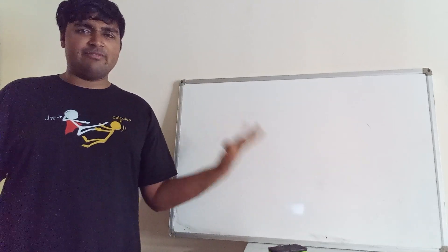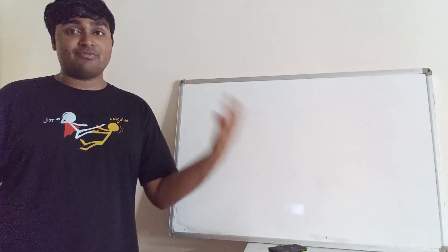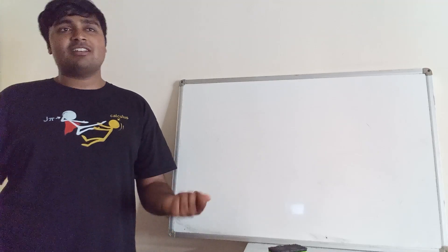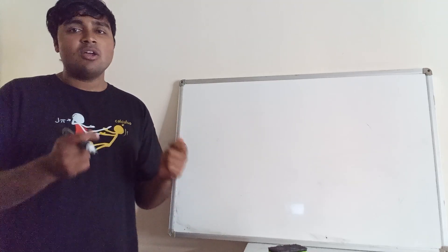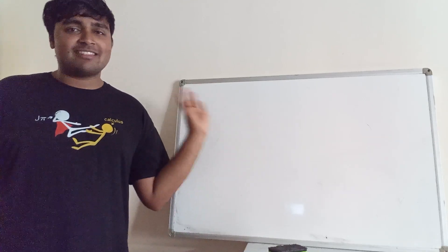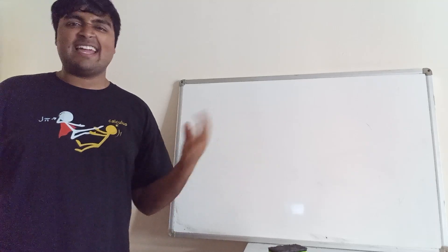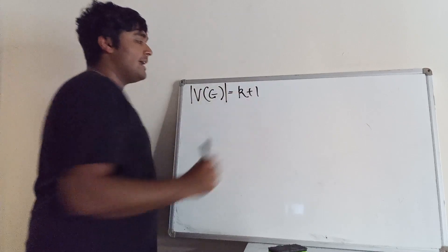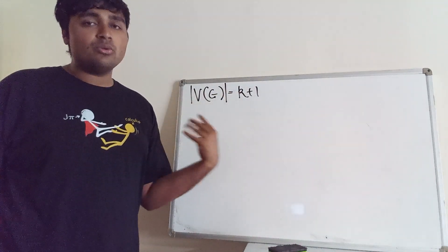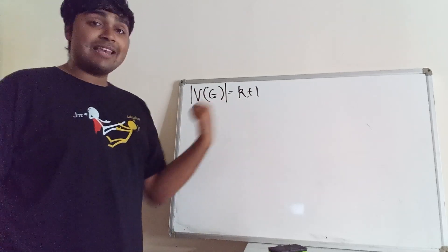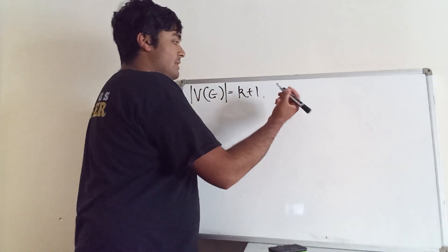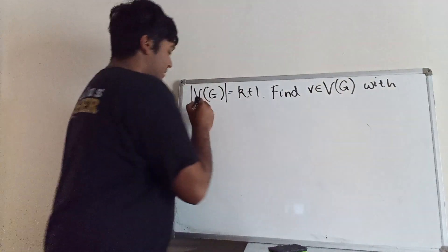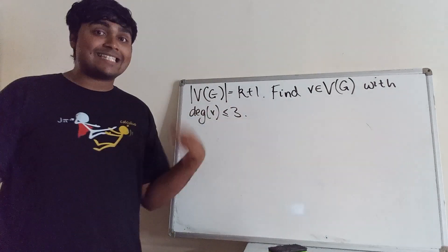The base cases N = 1, 2, 3, and 4 are trivial: with at most four vertices, we give each vertex a different colour, using at most four colours, with no two adjacent vertices sharing a colour. Now suppose the theorem holds for N = K. For N = K + 1, by the lemma we can find a vertex V with degree less than or equal to three.